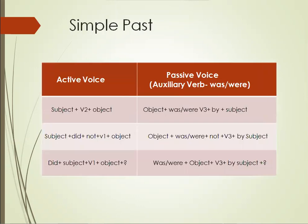First, simple past. To change a sentence of simple past tense into passive voice, we use the auxiliary verbs was and were. In affirmative, we follow the structure of subject, V2, and object — V2 here means the second form of the verb. And to change it into passive, we use the structure: object, was/were, V3, by, and subject.